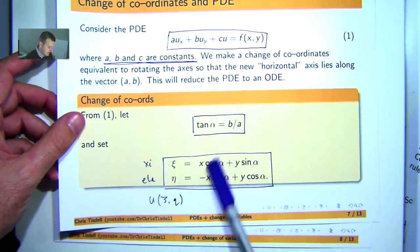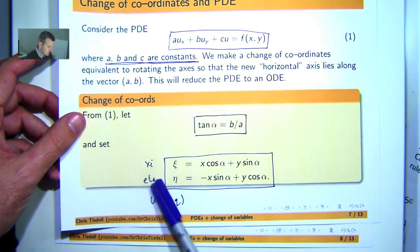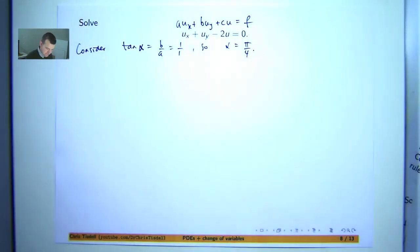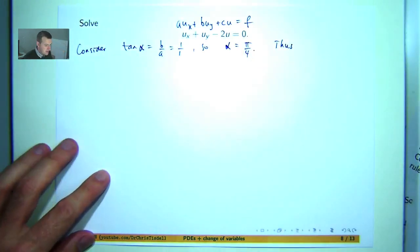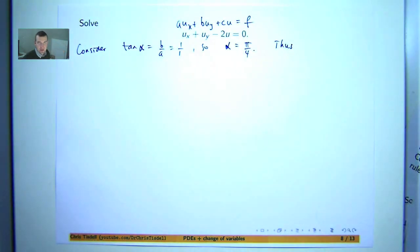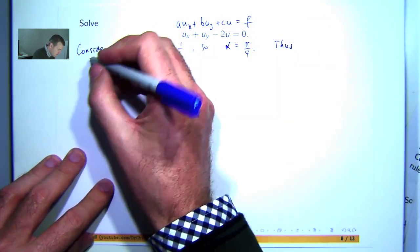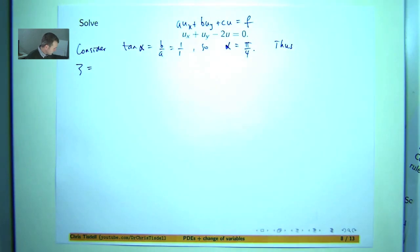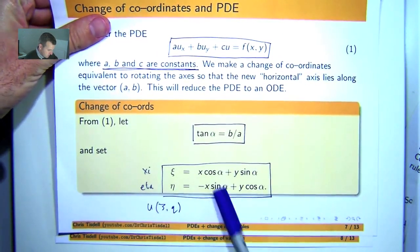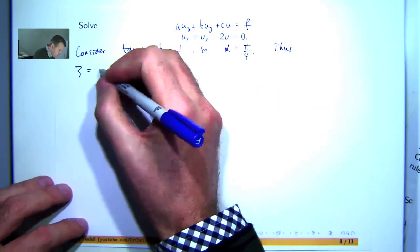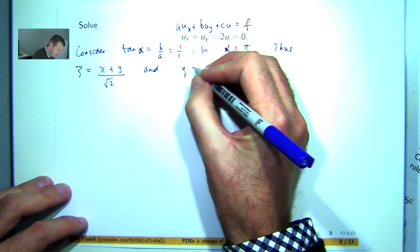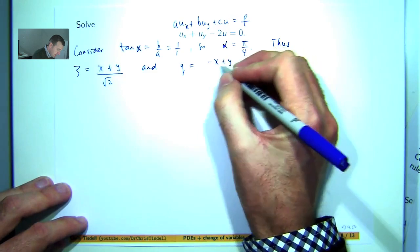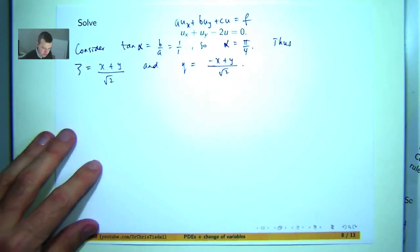Once we've established alpha, we can calculate cosine alpha and sine alpha and write down our new coordinates or new variables, psi and eta. If alpha is pi over 4, cosine of alpha will be 1 over root 2 and so will sine of alpha. So our representations are 1 over root 2 for each term, and I now have my new coordinates or new variables.